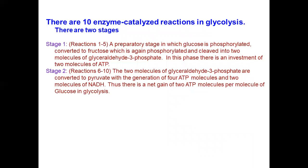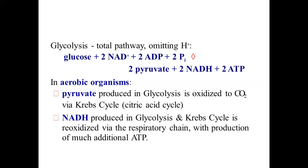In the second stage, glyceraldehyde-3-phosphate is converted to pyruvate — the end product — with generation of 4 ATP molecules and two molecules of NADH. In total we have two molecules of pyruvate, 4 ATP, and 2 NADH. There is a net gain of 2 ATP molecules per molecule of glucose in glycolysis, because two ATP molecules are consumed and four are produced.